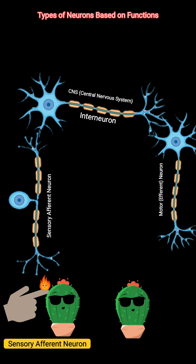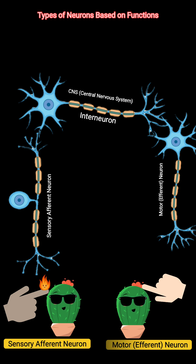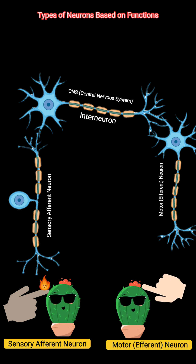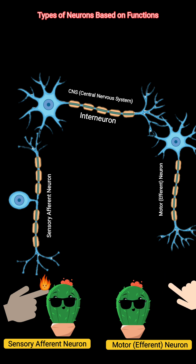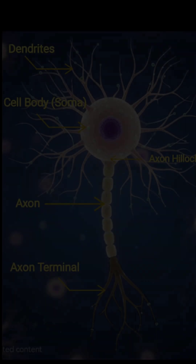Motor, or efferent, neurons carry signals from the CNS to muscles or glands, causing movement or secretion. Examples include moving your hand, contracting the heart, and blinking your eyes.